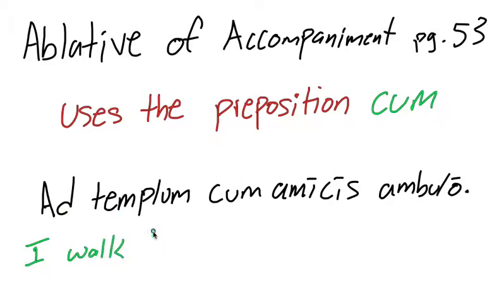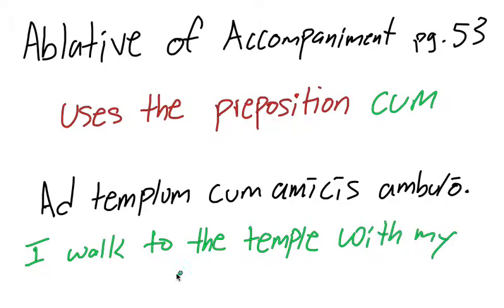ad templum, to the temple, which would be an accusative of place to which. Remember that's what accusative is used for with the preposition ad. So I walk to the temple cum amicis, with my friends.